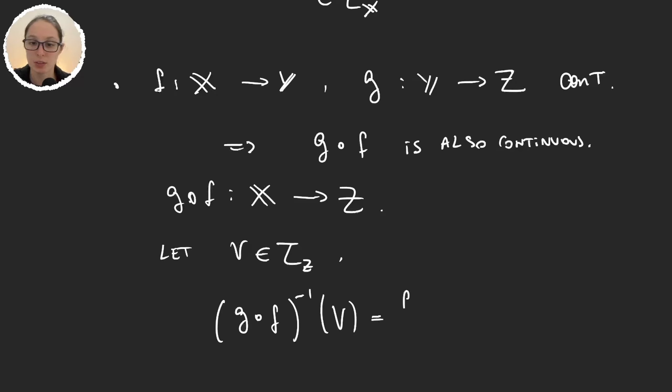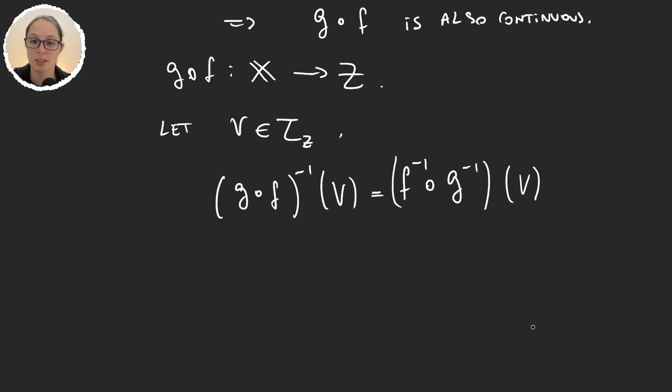Well, this is going to be the preimage of f composed with the preimage of g in b. So this is, using just the definition of a composition, it's f inverse of g inverse of b.